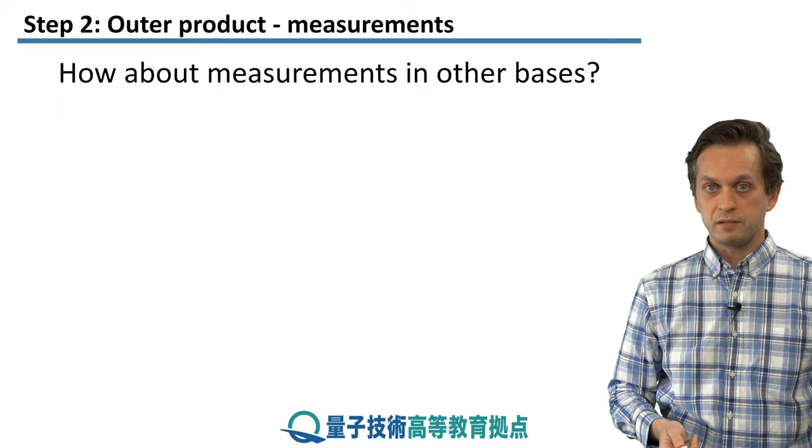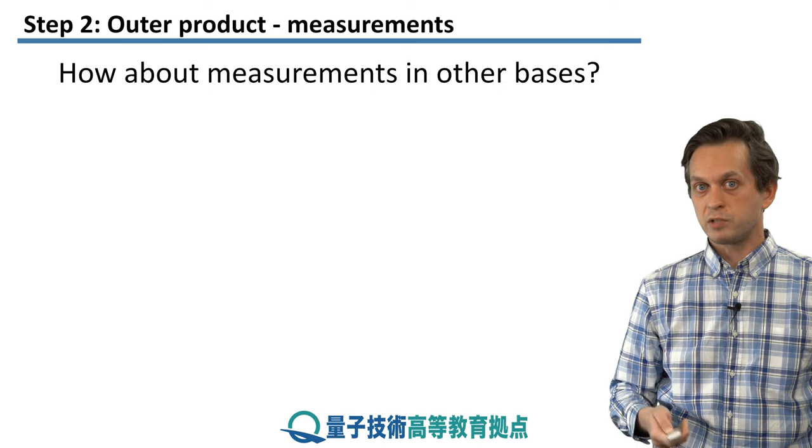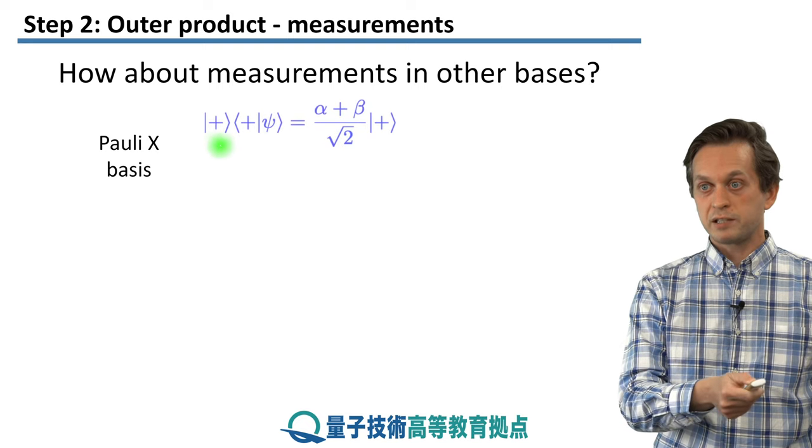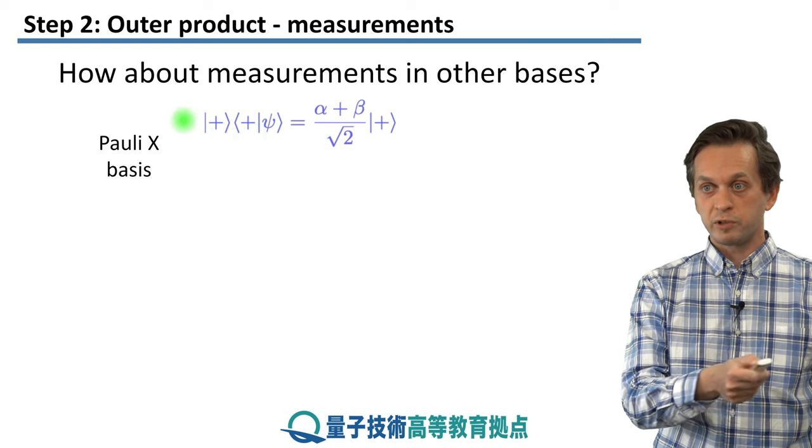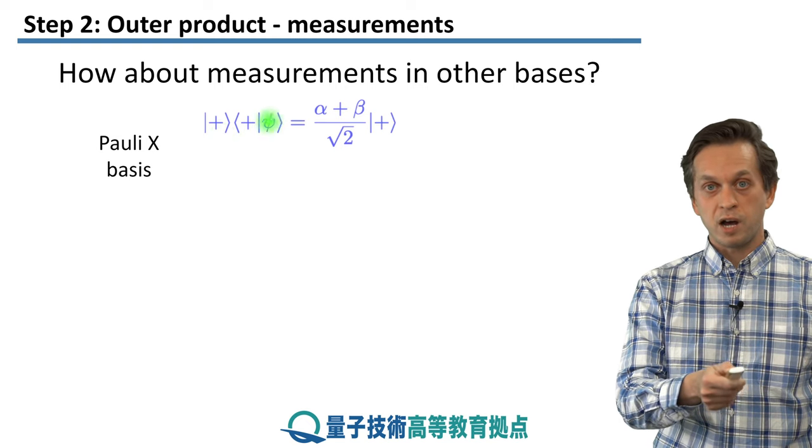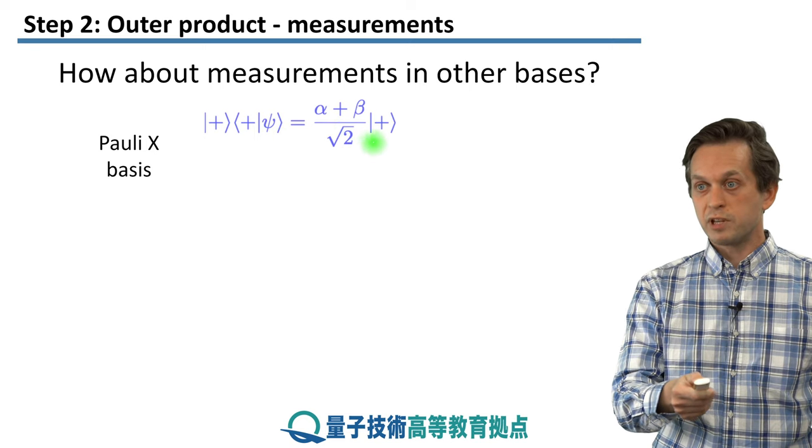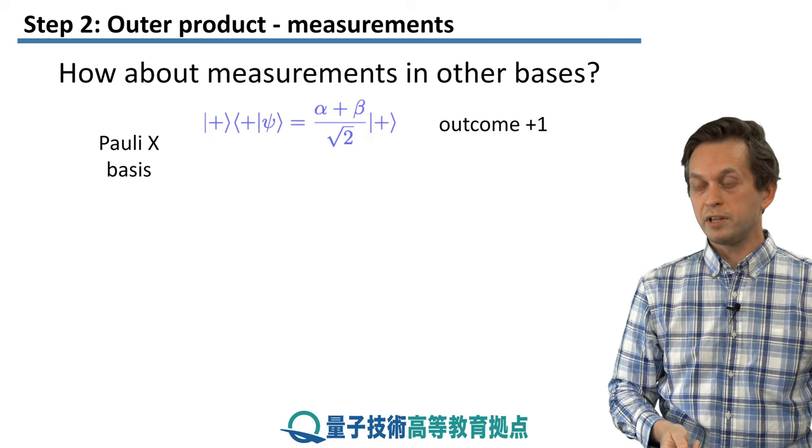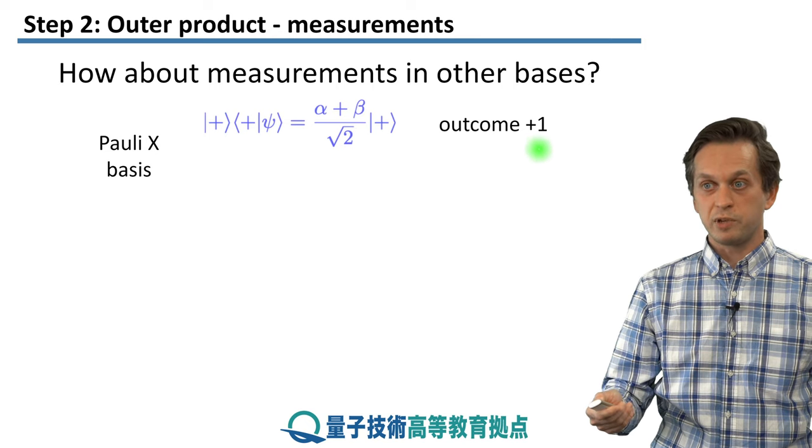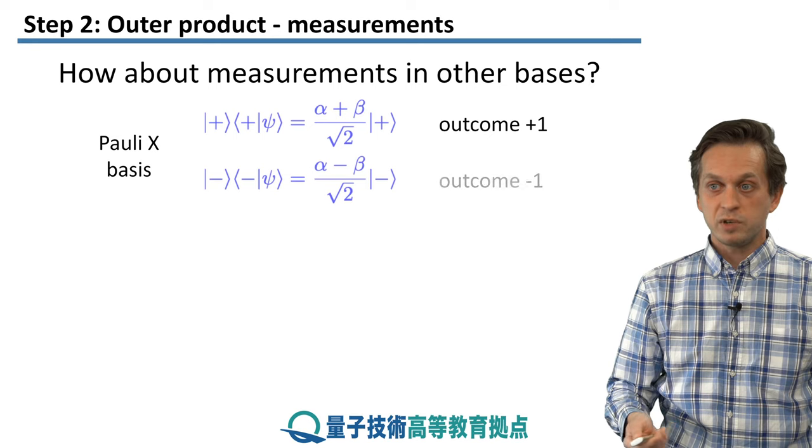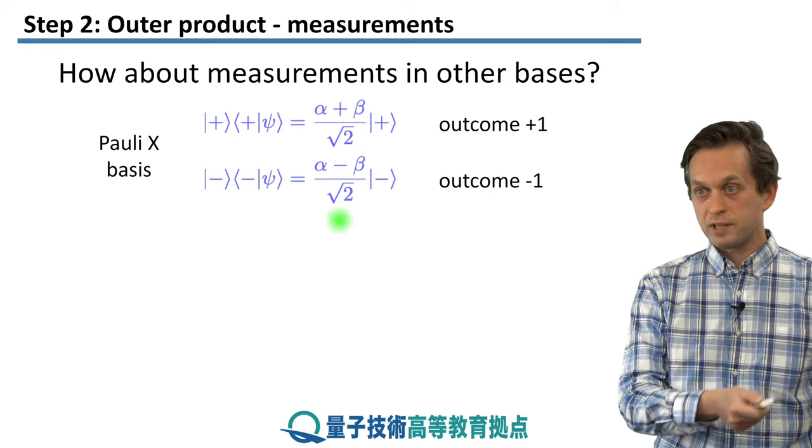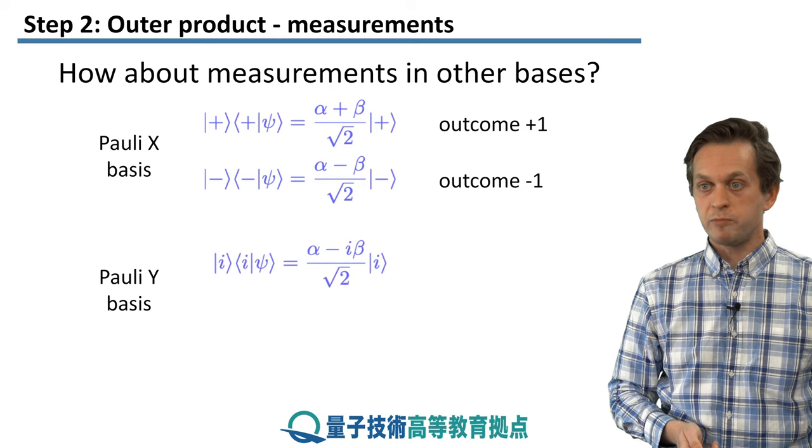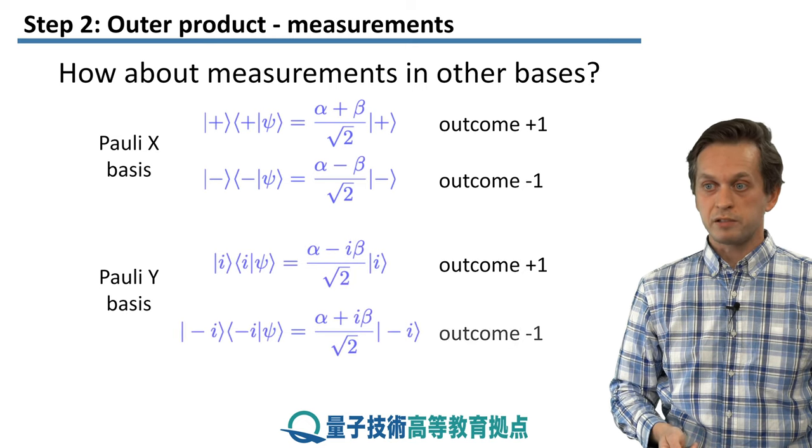So how about measurements in other bases? Maybe you can already guess from how we have been writing down the outer products for 0, 0 and 1, 1. Let's say that we want to measure in the Pauli-X basis. Well, that's rather simple as well. We just take the state plus and we form the outer product with itself. So we've got the outer product of plus plus acting on our arbitrary ket psi, and we get the following. So again, we are projecting onto the state plus with some complex scalar in front of the whole thing. So we are measuring in the X basis, where the outcome has been plus 1. Similarly, where the outcome is minus 1, we have the outer product of minus minus applied to psi. We got this complex scalar multiplying our state minus.